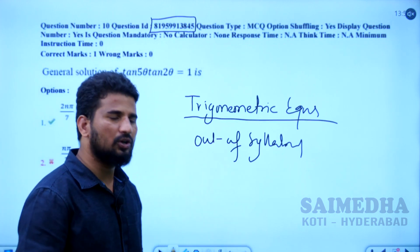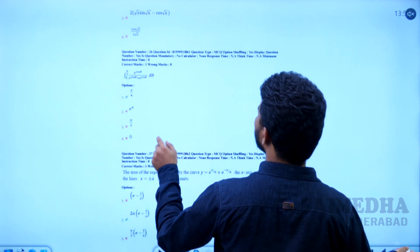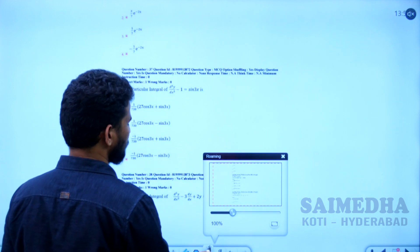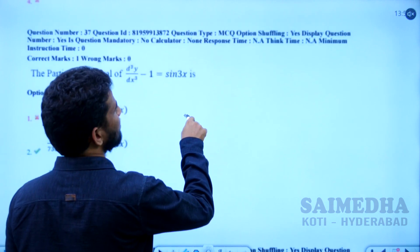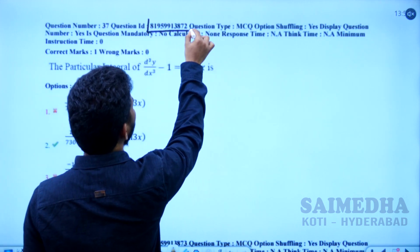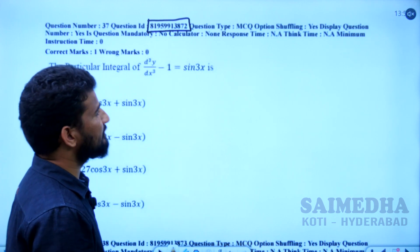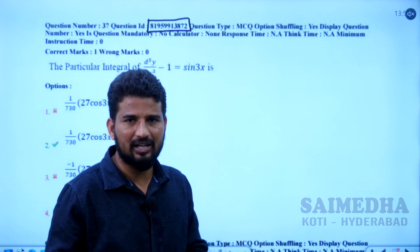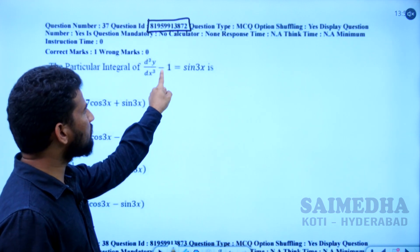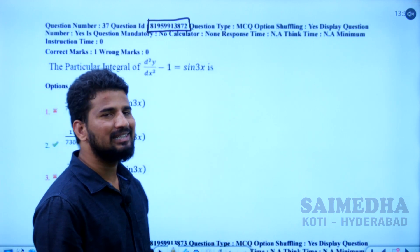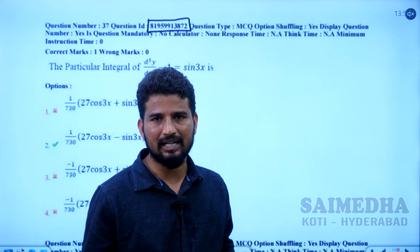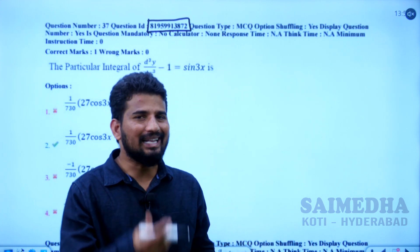Let us go ahead with the next question objection — question 37 of the mechanical paper. The question number ID here is 81959913872. You have to mention the question number ID in the submitted document. This question is the particular integral of d³y/dx³ minus 1 equals sin 3x. This is a wrong question — insufficient data. Let us choose yes — that is the wrong question you should mention.